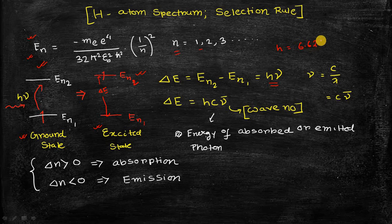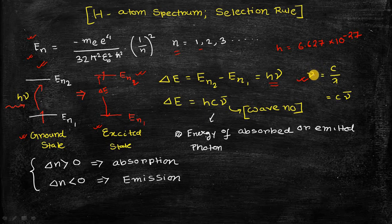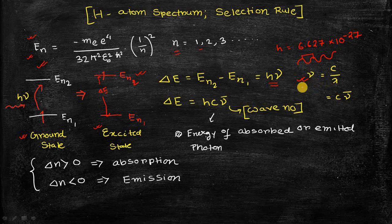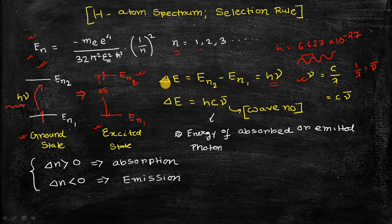Planck's constant has a value of 6.627 × 10⁻²⁷, and nu is the frequency of the radiation emitted. There is a relationship between the frequency and wavelength of electromagnetic radiation: nu equals c divided by lambda. The term 1/lambda is also expressed as nu-bar, called the wave number. Substituting, the equation becomes delta E equals h·c·nu-bar.